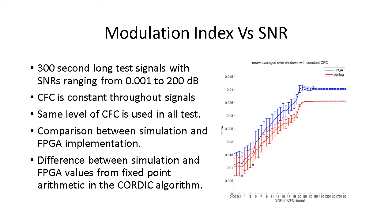Now we look at the modulation index raw values versus signal-to-noise ratio on test signals. We tested the effect of noise on this cross-frequency coupling algorithm by creating test signals with a constant cross-frequency coupling value but varying amounts of signal-to-noise ratio. For each test signal, we added increasingly more amounts of SNR, ranging from 0.001 to 200 dB, and m-raw was calculated over the entire test signal and then averaged. The plot on the right compares the simulated and FPGA implementation results. The gap between the two lines is from the fixed-point arithmetic and the CORDIC algorithm. The cross-frequency coupling algorithm is affected quite a bit by noise in the signal.